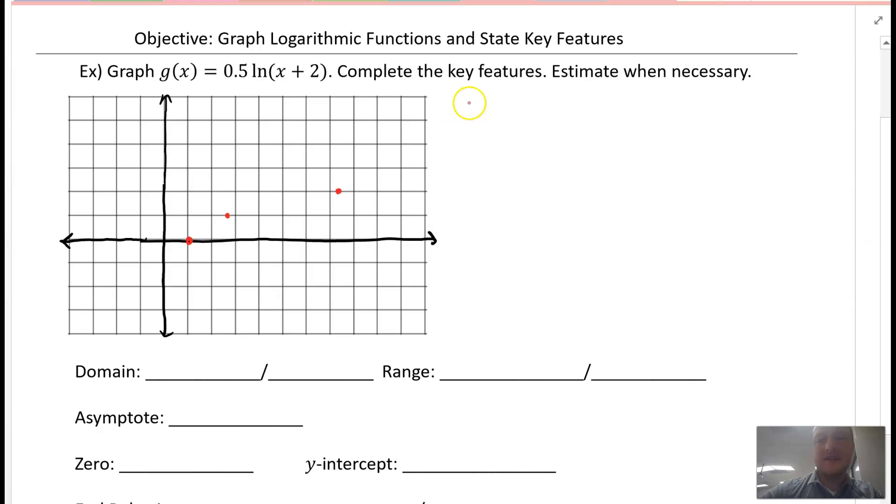Now what we want to do is identify our transformations. So a is 0.5 - that's going to be a vertical compression, so everything is going to get compressed closer to the x-axis. Our h value is negative 2, so that means we're going to the left 2.